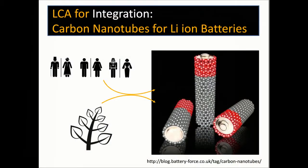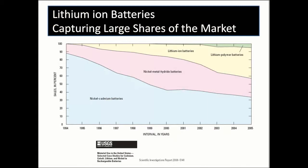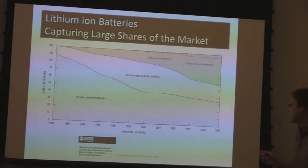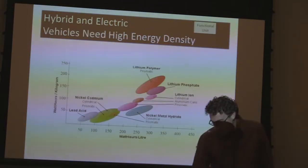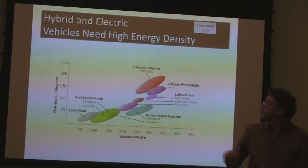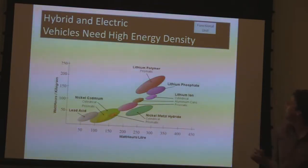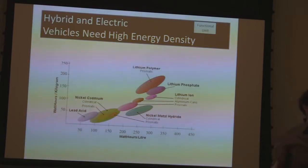We're going to walk through a case study of carbon nanotubes for lithium-ion batteries, and how this anticipatory model can incorporate both social and environmental concerns into technology development. Lithium-ion batteries are taking increasing shares of the market, particularly for hybrid and electric vehicles. The map in the top corner relates back to the anticipatory LCA model — showing you are here, at the functional unit stage.